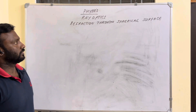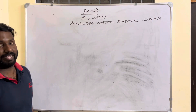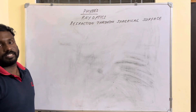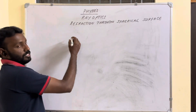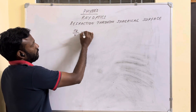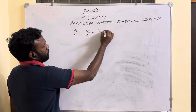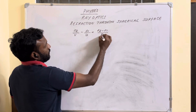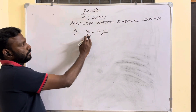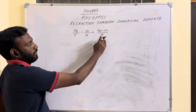Good morning students. In this class we are going to derive an expression for refraction through a convex spherical surface. The formula we are going to derive is: n2/v minus n1/u which is equal to (n2 minus n1)/r.